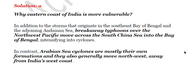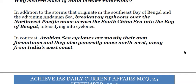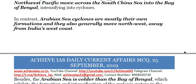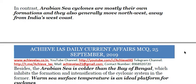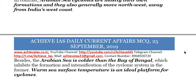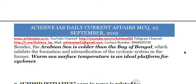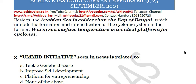The eastern coast is more vulnerable because in addition to storms forming in the southeast Bay of Bengal and Andaman Sea, breakaway typhoons from the north Pacific cross the South China Sea into the Bay of Bengal and intensify into cyclones. In contrast, Arabian Sea cyclones are mostly their own formations and generally move northwest away from India's west coast. Crucially, the Arabian Sea is actually colder than the Bay of Bengal, which inhibits cyclone formation there. Warm sea surface temperature is an ideal platform for cyclones.